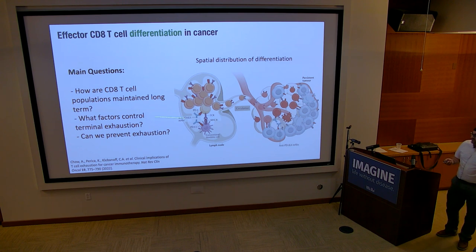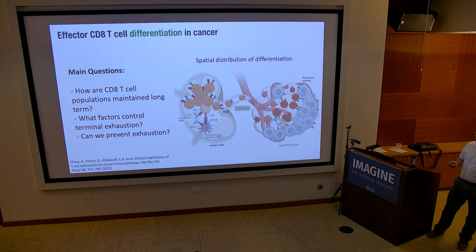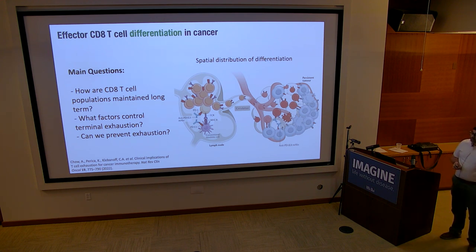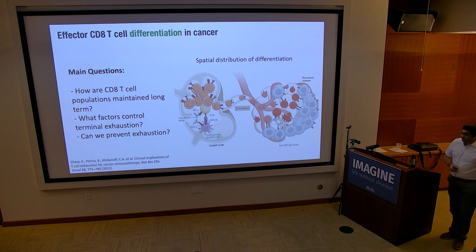The questions we've been asking are: how are these CD8 T cell populations maintained — specifically, whether the tumor draining lymph node is the reservoir of these cells — what factors control terminal exhaustion, and whether modulating those transcription factors can prevent exhaustion. That's a starting point for thinking about therapies that might mimic what the transcription factors would do.